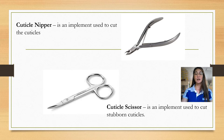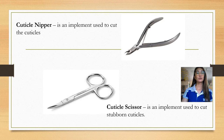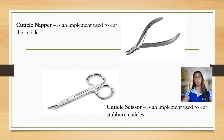The cuticle nipper is an implement used to cut the cuticles. The cuticle scissor is an implement used for stubborn cuticles that cannot be removed by the cuticle nipper. Both serve the same purpose, but most practitioners prefer the cuticle nipper, while some prefer the cuticle scissor.